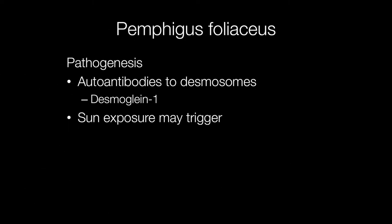Pemphigus foliaceus is caused by autoantibodies to desmosomes, which are the structures that stick the skin cells together. More specifically, the antibodies are against Desmoglein 1, the protein in the desmosomes. Sometimes Pemphigus foliaceus may be triggered by sun exposure.